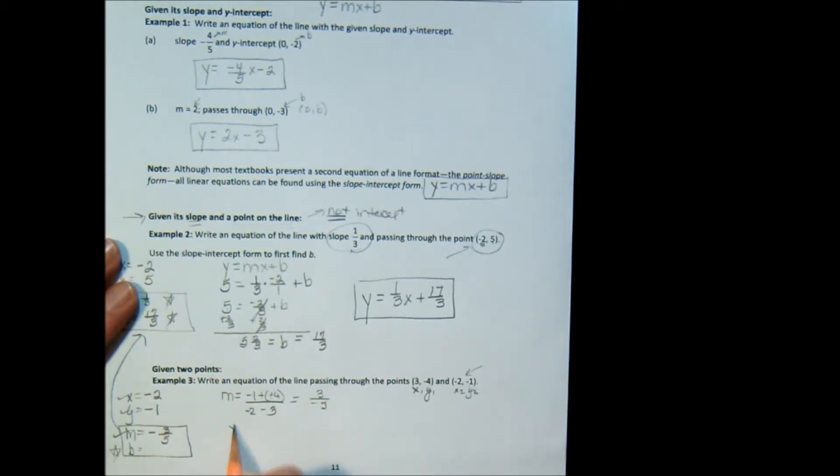So we're going to say y equals mx plus b. Or negative 1 equals m times x plus b. Negative 1 equals negative 3 fifths times negative 2, which is 6 fifths plus b. Now let's move up here because I'm running out of space. Negative 1 equals 6 fifths plus b.